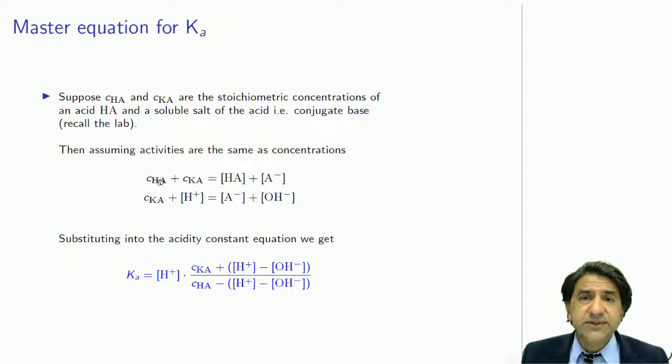We don't know how much of it turns into acetate and how much of it stays as undissociated acetic acid molecules. But we do know how much acetic acid solid we put in the water, so we can work out the total concentration. That's CHA, total concentration of HA.